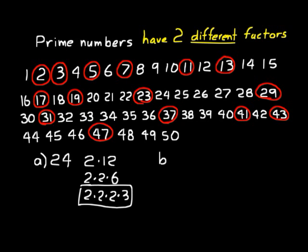Let's try 10. It's an even number, so 2 is a factor. 2 times 5 — and those are both prime numbers, so that's it. The prime factorization of 10 is 2 times 5.